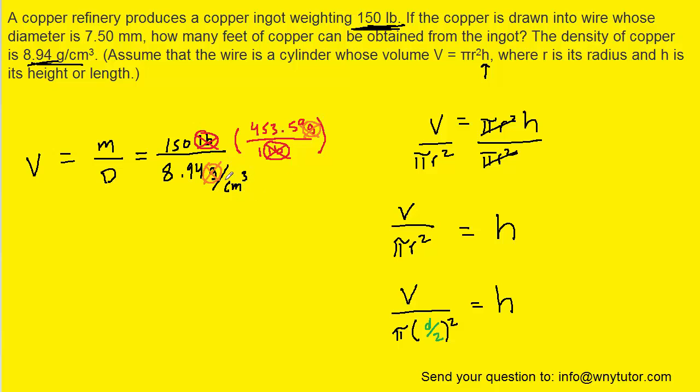And that's going to leave us with a unit of centimeters cubed. So what you can do is pick up your calculators, you can multiply 150 by the 453.59 and then divide by 8.94. That will give you the volume in centimeters cubed.